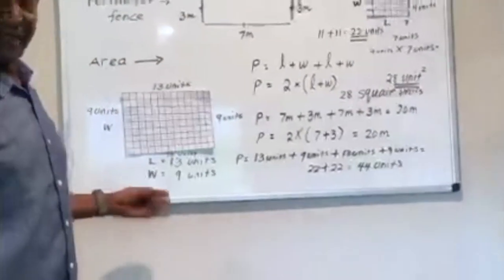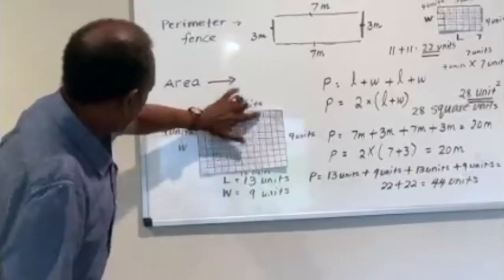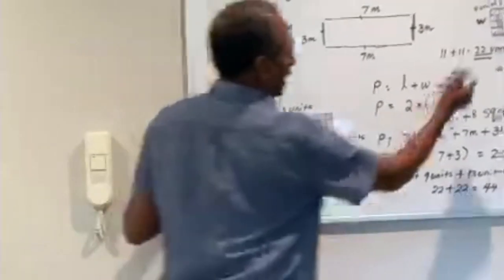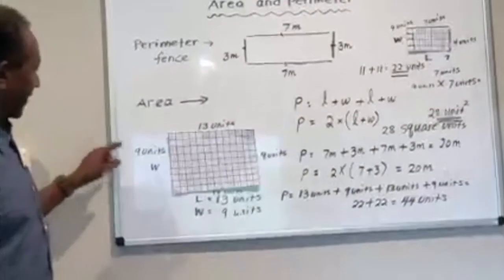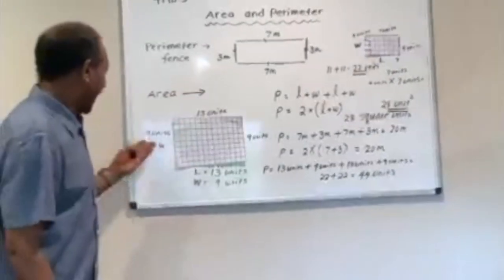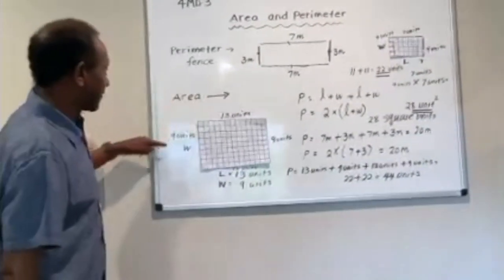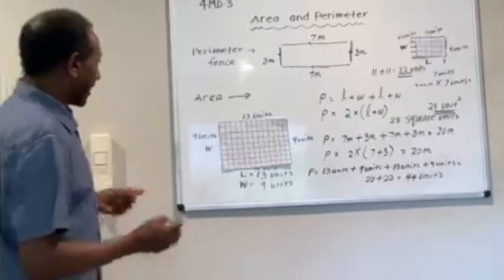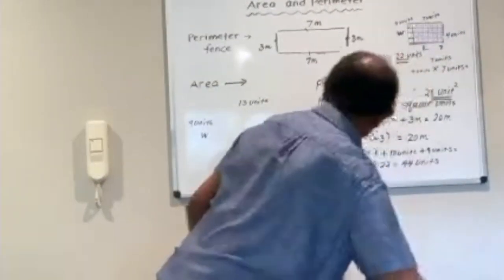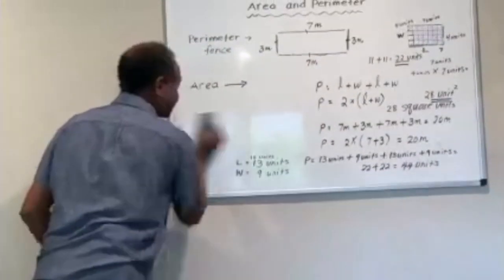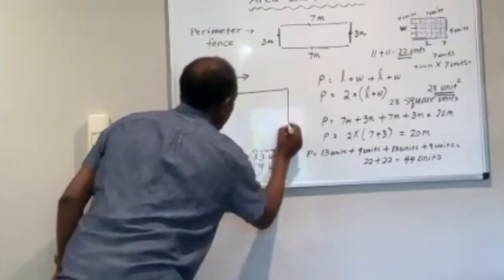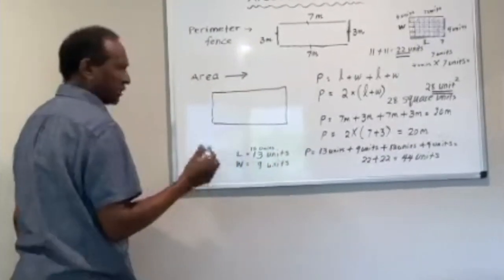Are you following me? So the perimeter is 44 units. Now the area — we know that by multiplying the side lengths we can figure out how many square units are in this rectangle. That's 13 times 9. I will use the area model to multiply 13 times 9 quickly. I'll draw a simple area model.